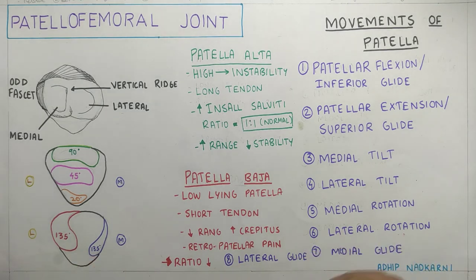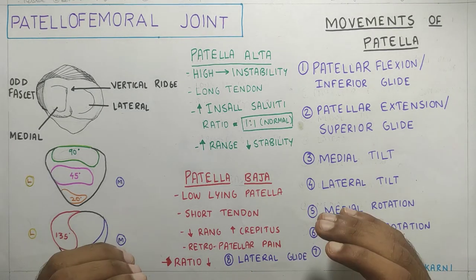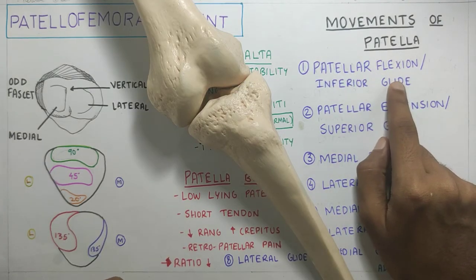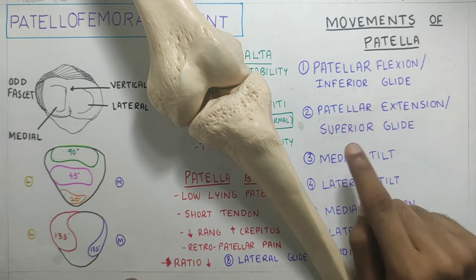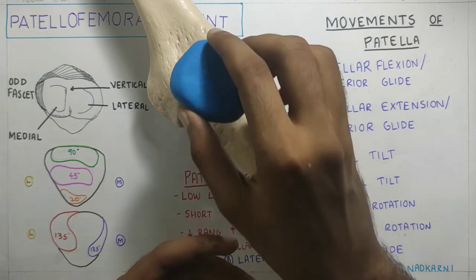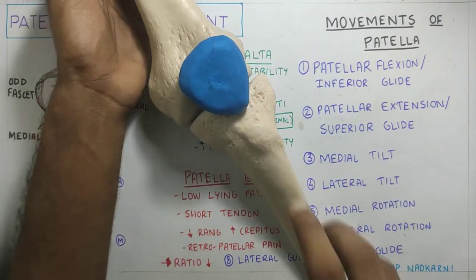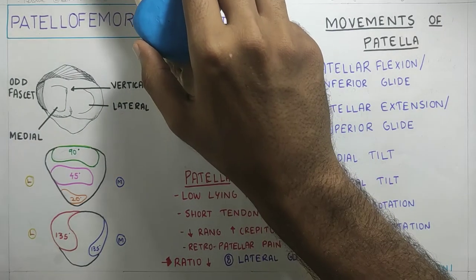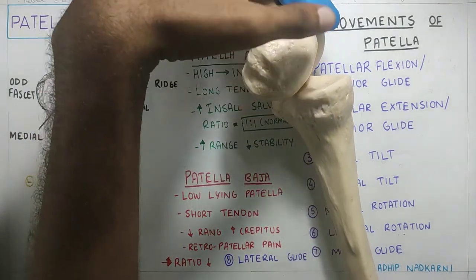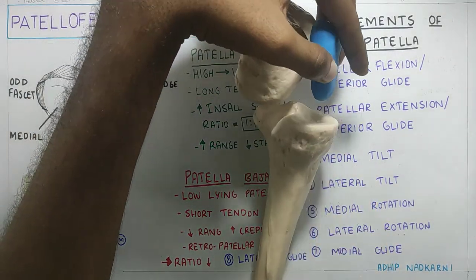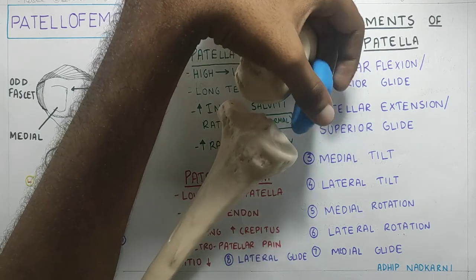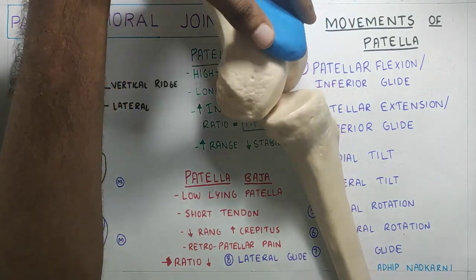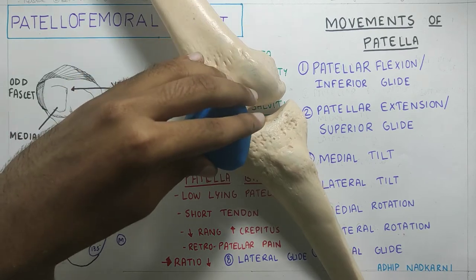Why are we learning about patellar movements? During patellar flexion there is inferior glide of the patella, and during patellar extension there is superior glide. During flexion, the patella moves inferiorly and the pole of the patella points posteriorly. During extension, the patella glides superiorly, and it also moves from medial to lateral.